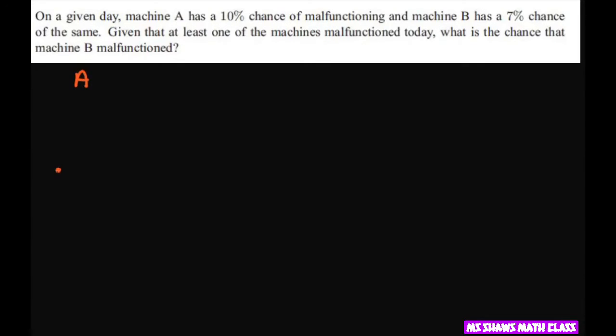For Machine A, this is for any day, so this is malfunction and not malfunction. This is 0.1 for malfunction, and therefore this has to be 0.9 for not malfunction.